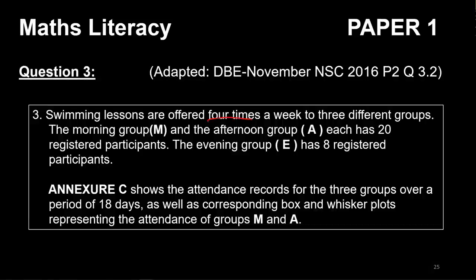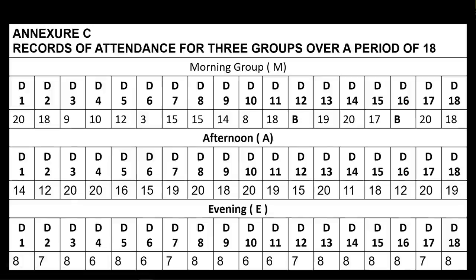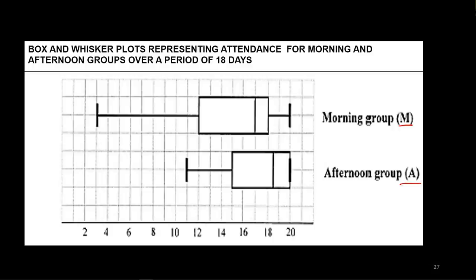It's data handling — levels one to four. One example: swimming lessons are offered four times a week to three different groups. The morning group M and afternoon group A each have 20 registered participants. The evening group E has only eight registered participants. Annex C shows attendance records for the three groups over 18 days, as well as box-and-whisker plots representing the attendance of groups M and A.